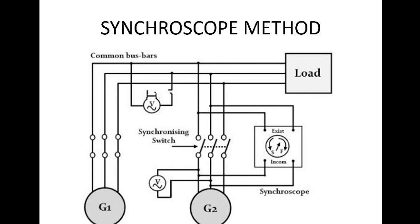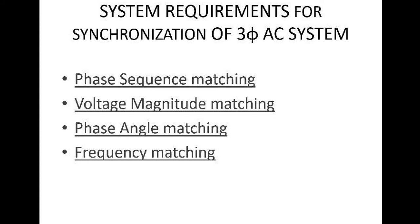The system requirements for synchronization of two three-phase AC systems are: phase sequence matching, voltage matching, phase angle matching, and frequency matching. Phase sequence matching is basically not a strict requirement for synchronization — it is done for the ease of maintenance people. Two different phases of two different systems can get synchronized, but later that will create a big problem for maintenance people since color coding is done earlier and mismatched phases make it difficult to identify them.